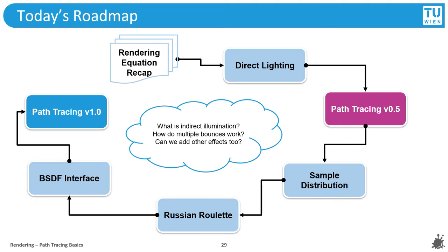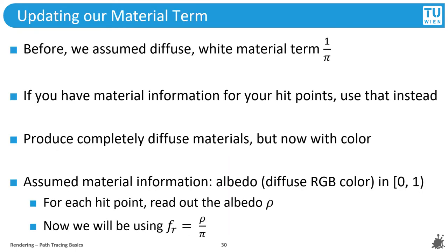We have passed our first milestone, so now we focus on our next big goal: a working path tracing prototype. Beyond direct illumination, we want to collect all remaining indirect light found when examining the scene closely. A quick modification: we want to add color. Before, we used the constant 1/π, which corresponds to a perfectly white material. We will still stick to diffuse materials, so the BRDF value will still be a constant term per object.